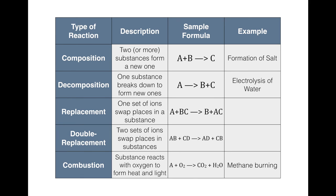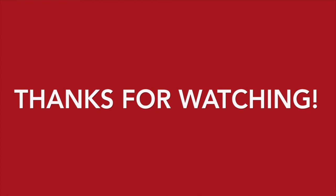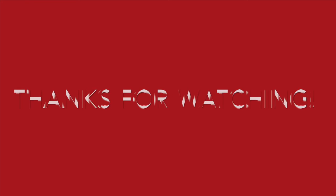So there you go — those are the four main categories of chemical reactions, with nice, simple examples. It all has to do with how the reactants turn into the products: they can either come together in composition, break down in decomposition, swap places in replacement reactions, or react with oxygen to form carbon dioxide and water in combustion reactions. If you have any questions, please let me know. Thanks for watching — see you next time.